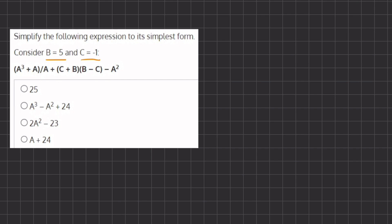So because A is our unknown value, we are going to keep it as A. So we have A cubed plus A divided by A plus C, which is our negative 1, plus B, which is 5.